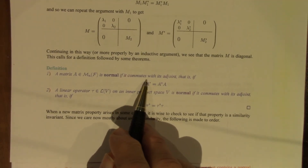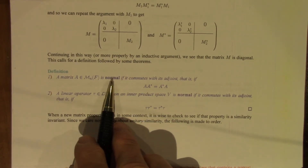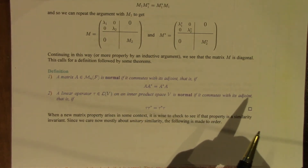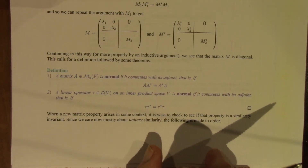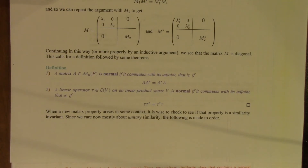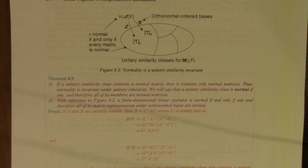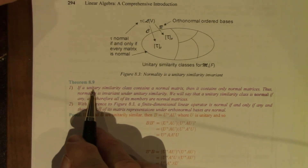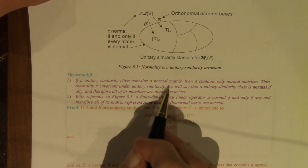Now, before continuing, we should pause here, because whenever we define a property on matrices, it's wise to check and see if that property is a similarity invariant — and in particular, a unitary similarity invariant. And the answer is yes. If a unitary similarity class contains a normal matrix, then it contains only normal matrices. That is another way of saying that if a matrix is normal, any other matrix that's unitarily similar to it will also be normal.